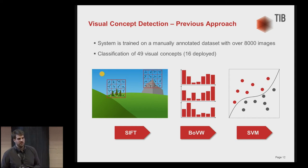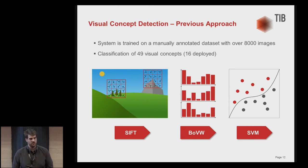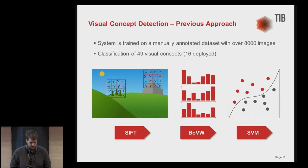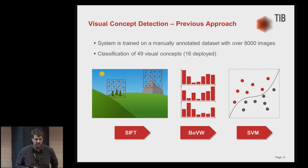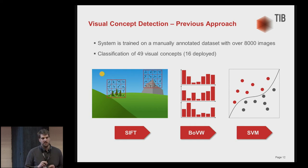Now about our previous solution. It used SIFT — Scale-Invariant Feature Transform — and bag-of-visual-words for feature extraction, and support vector machines for the classification module. The SIFT features are computed at certain points inside the image based on the orientation and magnitude of gradients inside the image.